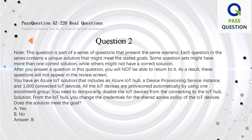You have an Azure IoT solution that includes an Azure IoT Hub, a device provisioning service instance, and 1,000 connected IoT devices. All the IoT devices are provisioned automatically by using one enrollment group. You need to temporarily disable the IoT devices from connecting to the IoT Hub. Solution: from the IoT Hub, you change the credentials for the shared access policy of the IoT devices.